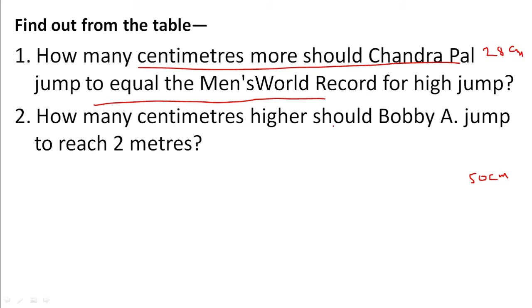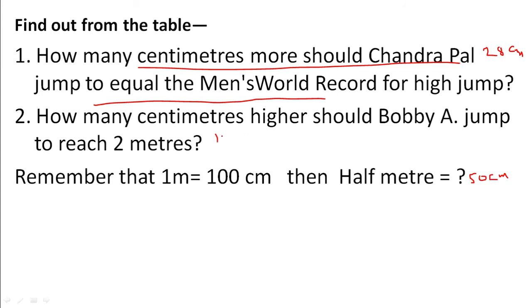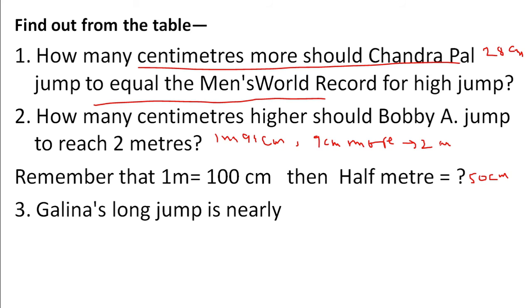Question: How many centimeters higher should Bobby A jump to reach 2 meters? Bobby A jumps 1 meter 91 centimeters. If it were 100 centimeters it would be 2 meters, so she needs 9 more centimeters — 91 plus 9 equals 100 centimeters, which equals 1 meter, giving a total of 2 meters. Answer: 9 centimeters.